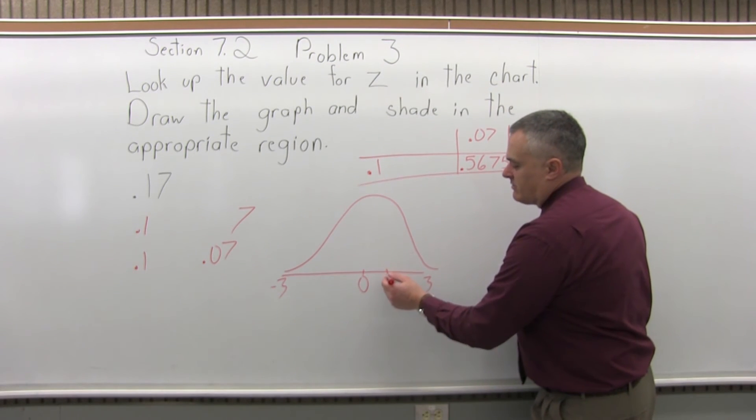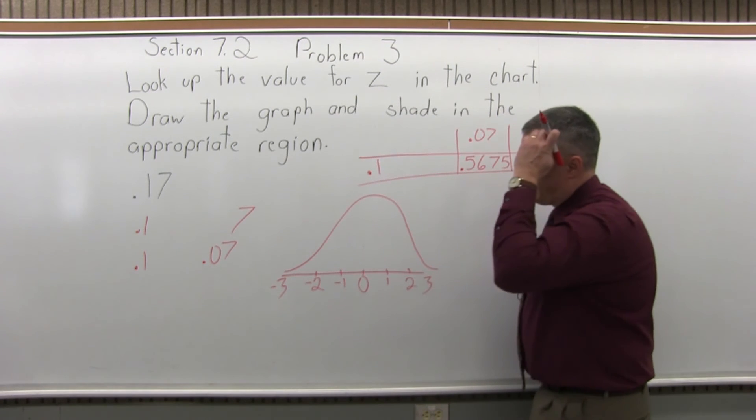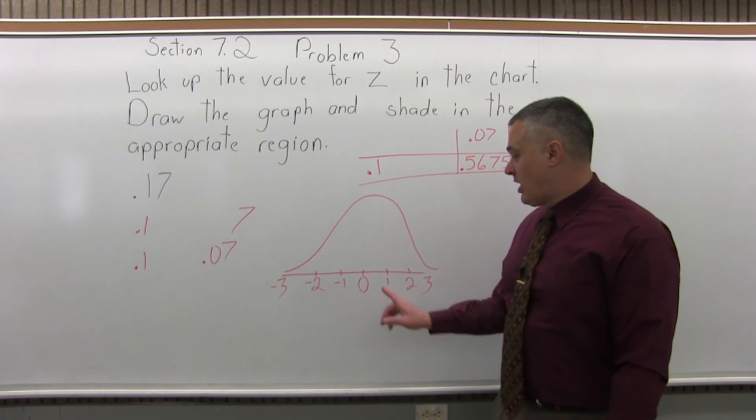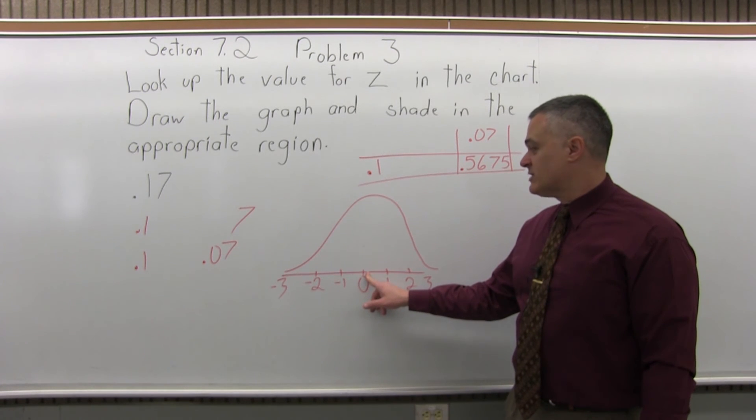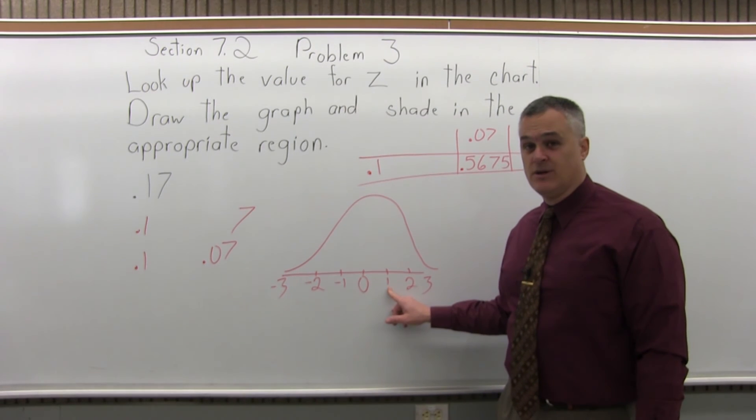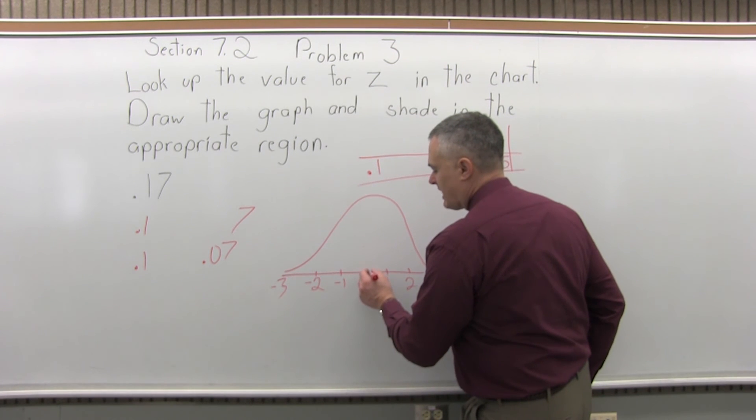And then you can evenly space out 1, 2, 3 on the right and -1, -2, -3 on the left. Now .17 is positive, but it's really close to zero. If this is a dollar, .17 is 17 cents. So it's only a tiny bit bigger than average.